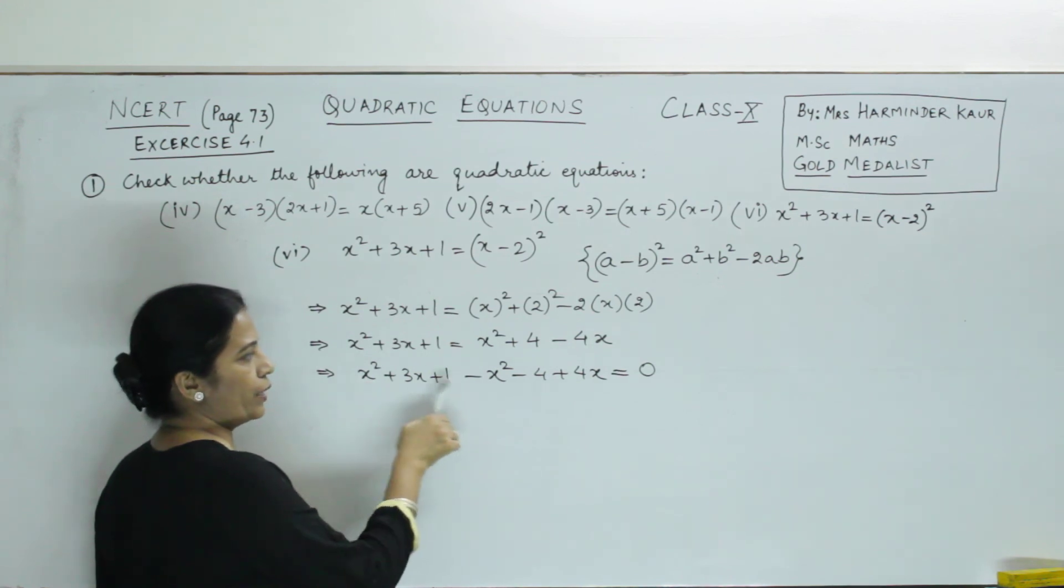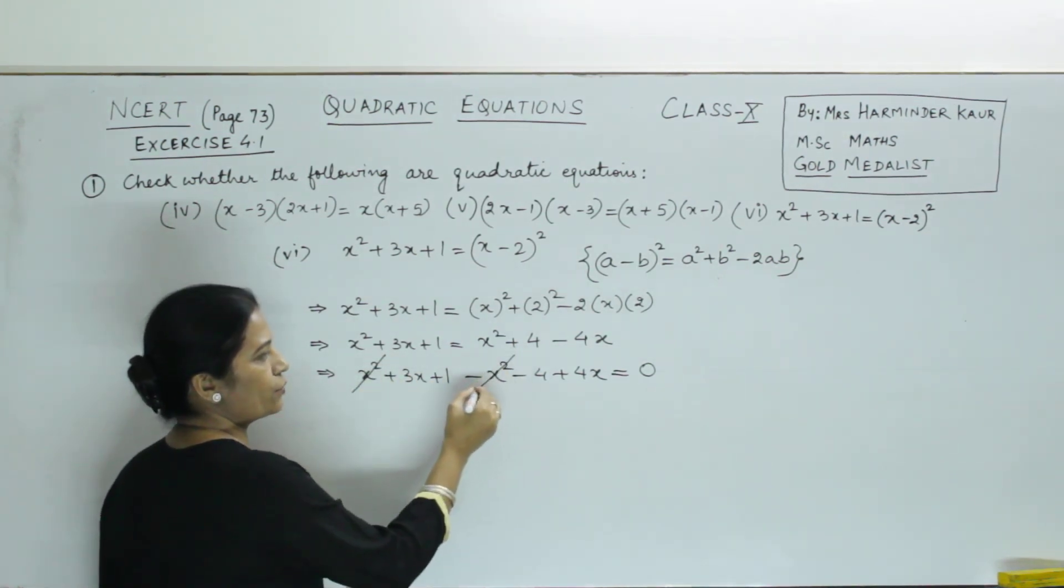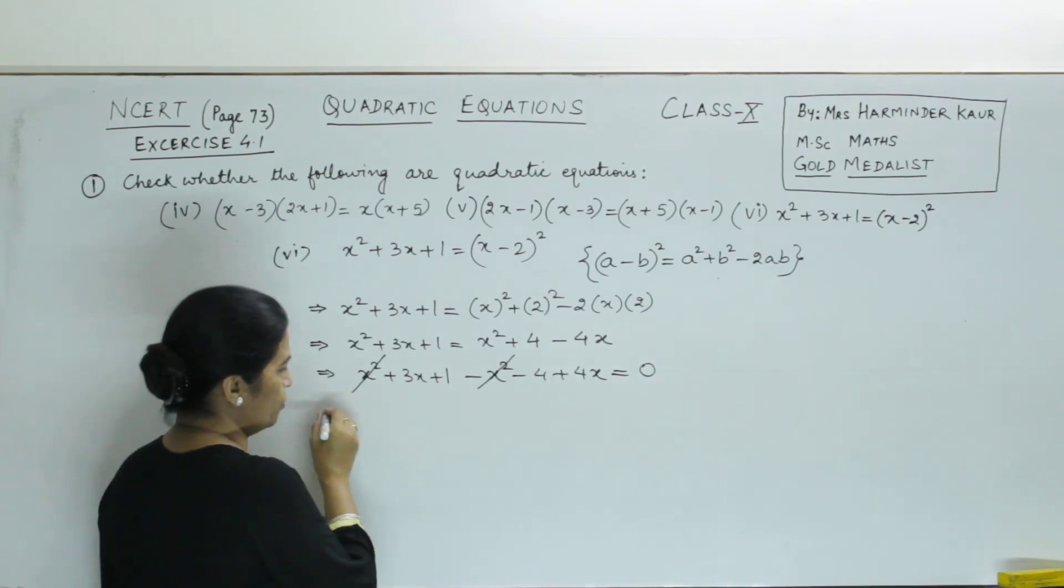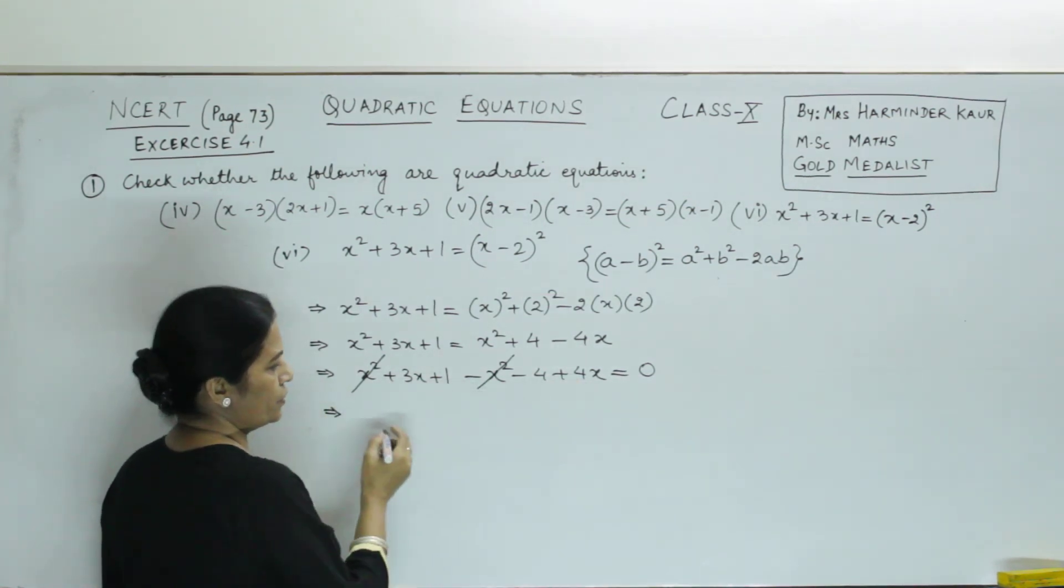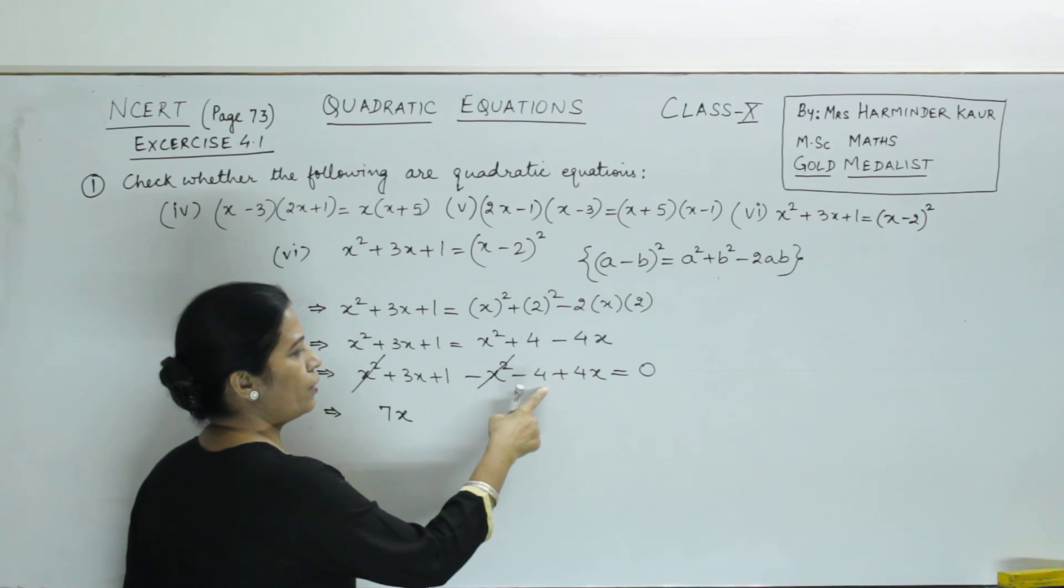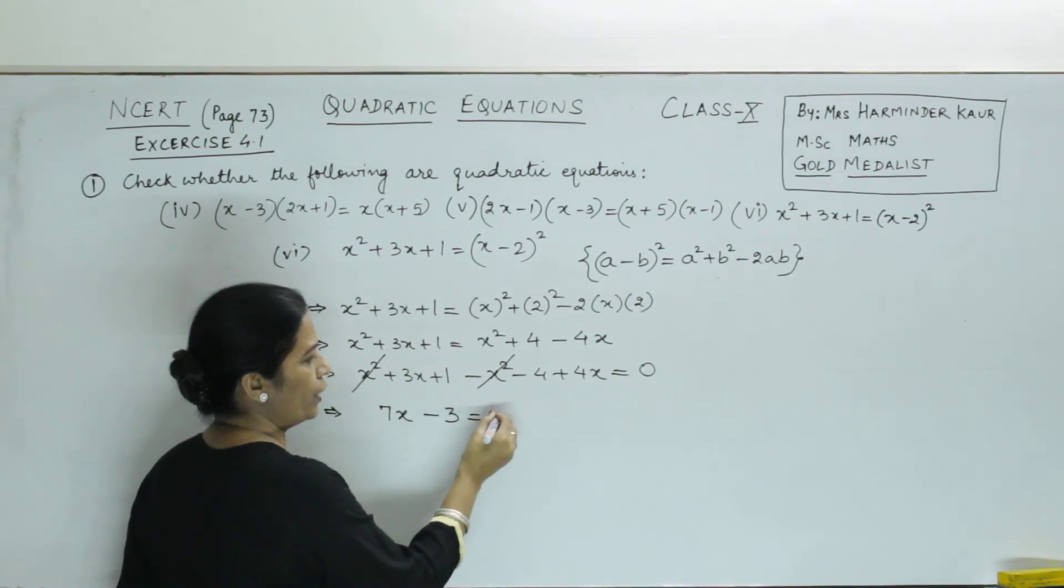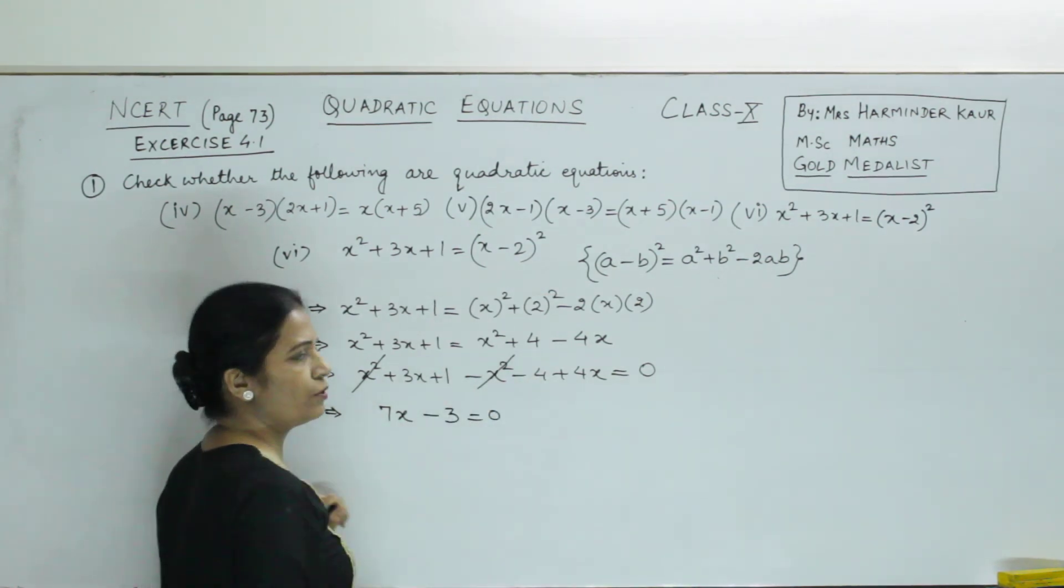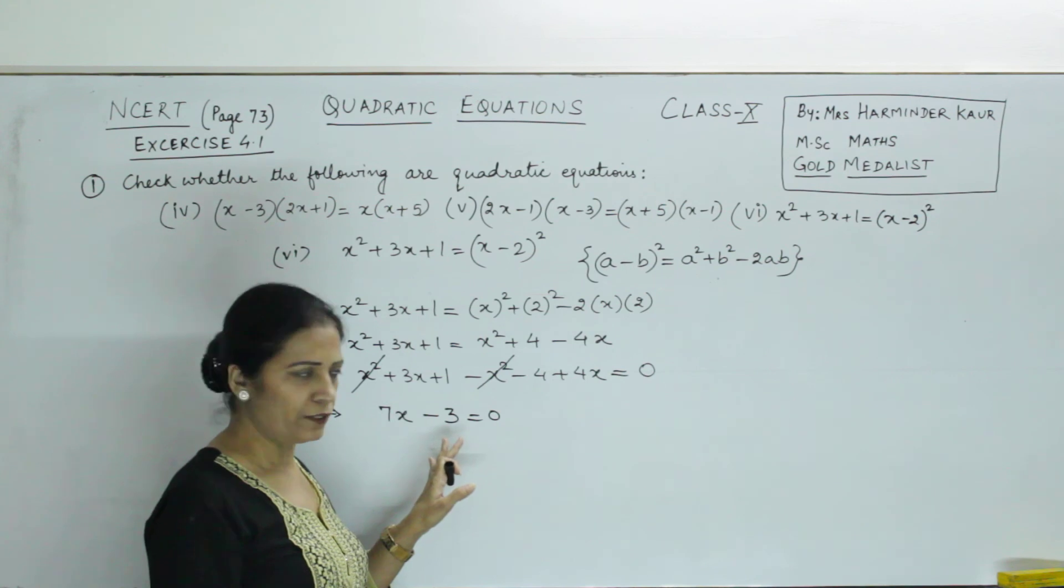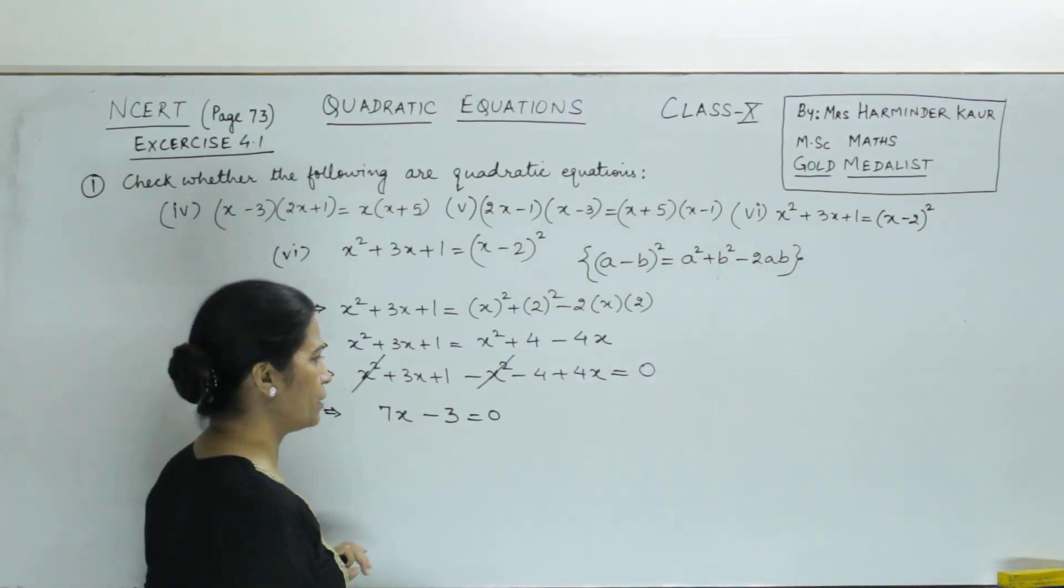All terms, we shift to left side. It is x² + 3x + 1 - x² - 4 + 4x = 0. Now, x² and x² are two x² terms, but they are of opposite sign, so cancel. Now, 3x and plus 4x, both positive, so it is 7x. Constant 1 and minus 4. 1 and minus 4 becomes minus 3. Because one positive, one negative, we subtract. And sign of larger number.